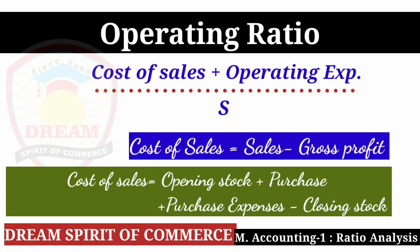Now Operating Ratio: Operating Ratio equals Cost of Sales plus Operating Expense, divided by Sales, multiplied by 100. Cost of Sales can be found by two methods. Method 1: Cost of Sales equals Sales minus Gross Profit. Method 2: Cost of Sales equals Opening Stock plus Purchase plus Purchase Expense minus Closing Stock. Use whichever method is possible.